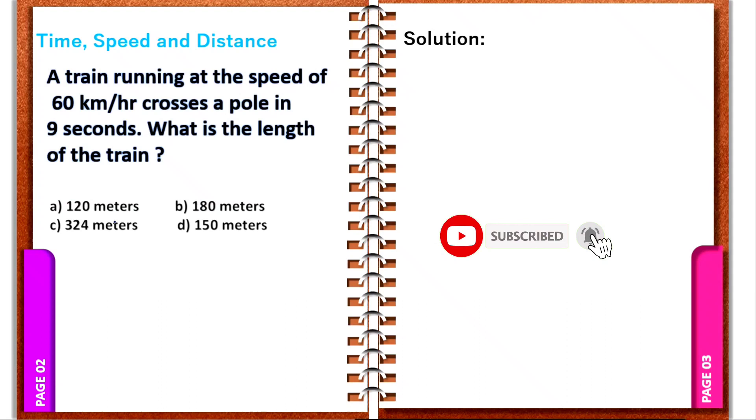Options: 120 meters, 180 meters, 324 meters, and option D, 150 meters. If you see a train running at the speed of 60 km per hour crosses a pole in 9 seconds.